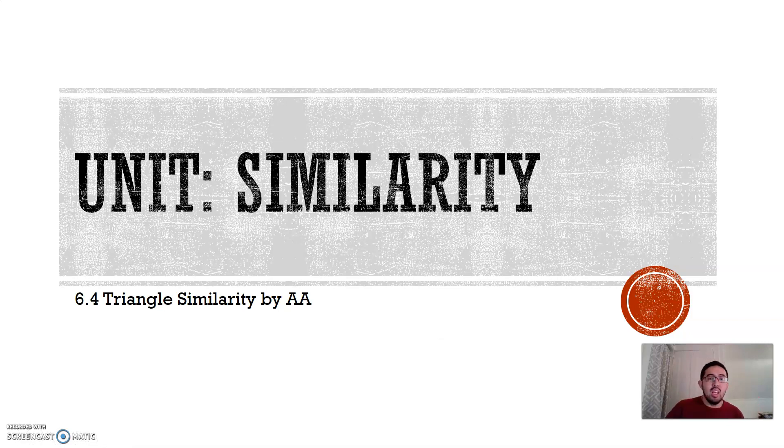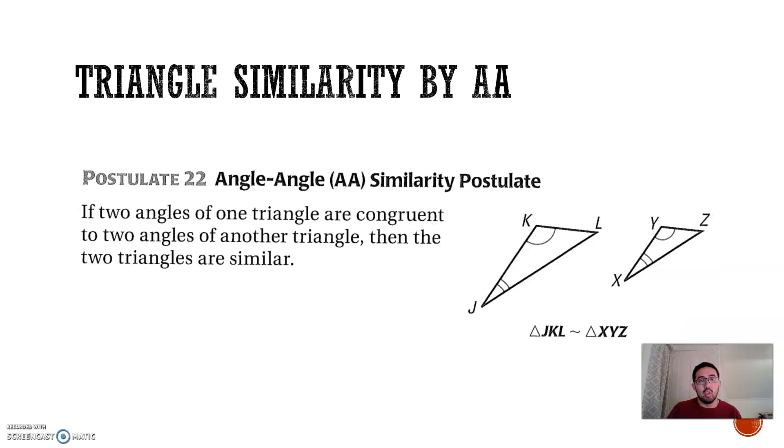We actually started yesterday, but I'm recording this video a day later for those of you who missed our live session. So we're going to begin with triangle similarity with the first way to be able to tell whether triangles are similar, which is by AA. Essentially, what AA stands for is when two angles of a triangle, of two separate triangles, are congruent, then the triangles must be similar.